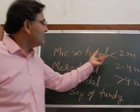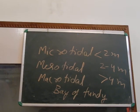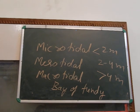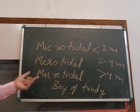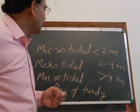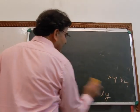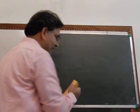Depending on the tidal range, the velocity of tidal currents is very low in the microtidal setting and very high in the macrotidal range. The tidal currents are not uniform — their velocity and effect increases and decreases according to the tidal range.